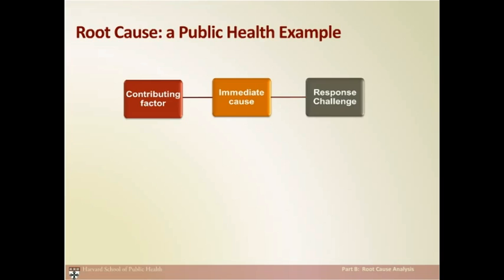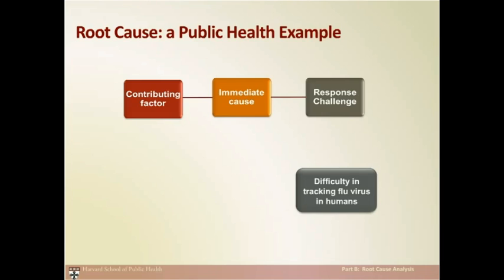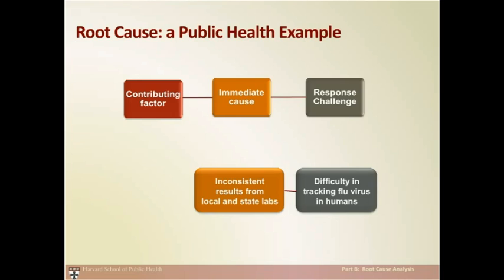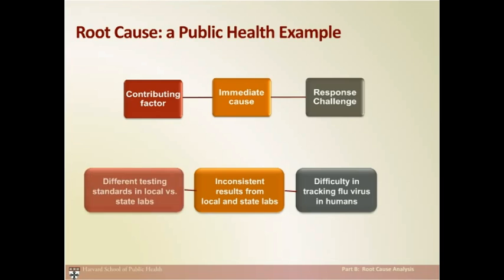Here we see root cause analysis applied to the public health problem of tracking the flu in a population. We repeatedly ask the question why and peel away the layers which lead to the root cause. One outcome, referred to as a response challenge, is the difficulty in tracking influenza virus in humans. Why? The immediate cause is inconsistent results from testing influenza in local and state labs. Why are there inconsistent results between these different labs? The contributing factor, or root cause, that underlies these inconsistent testing results is the issue of different testing standards in local labs versus state labs.